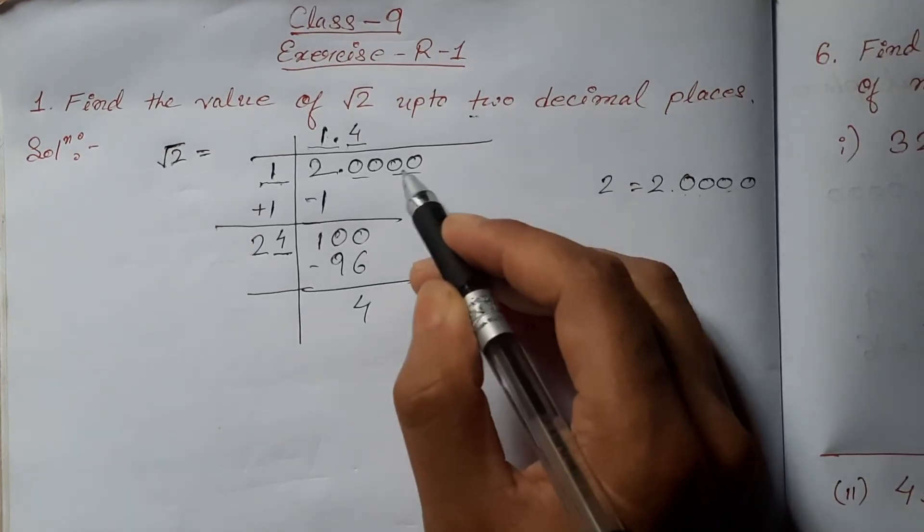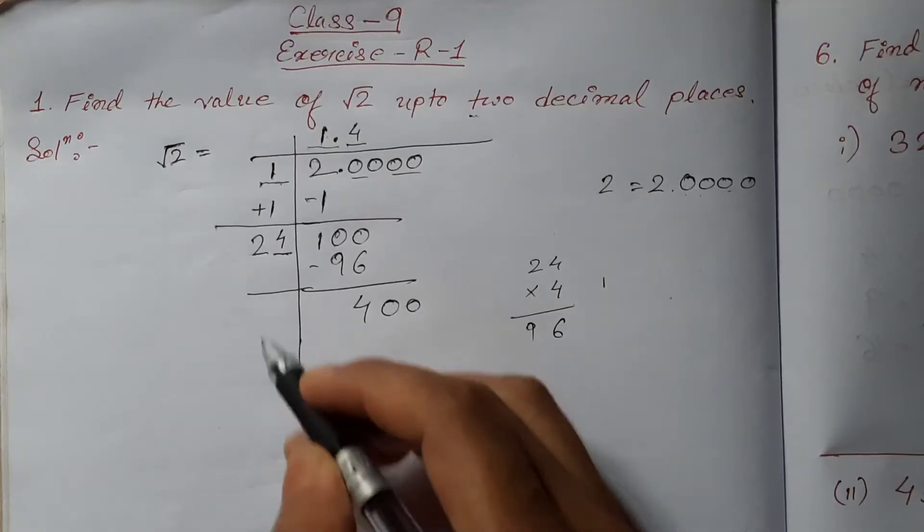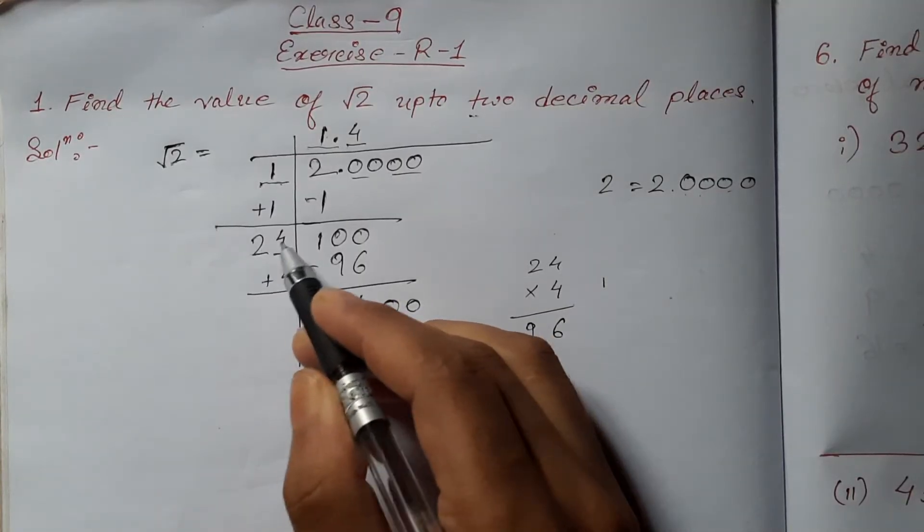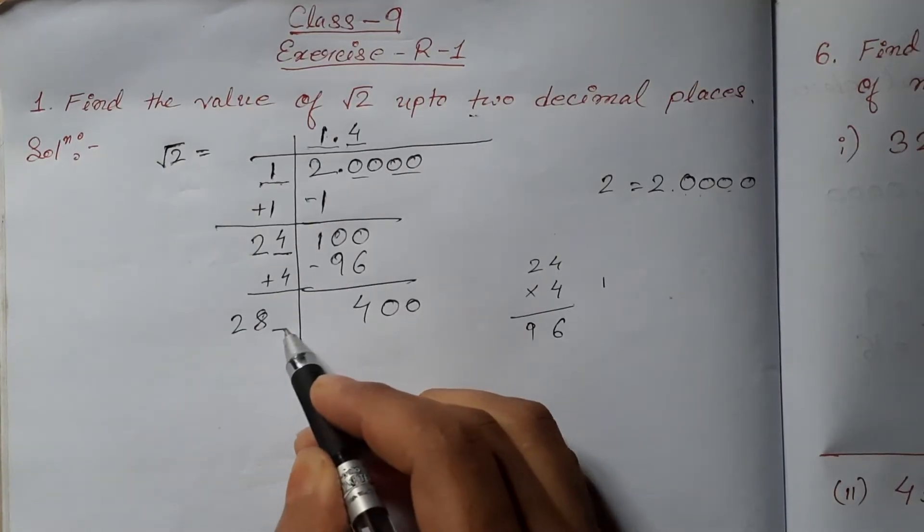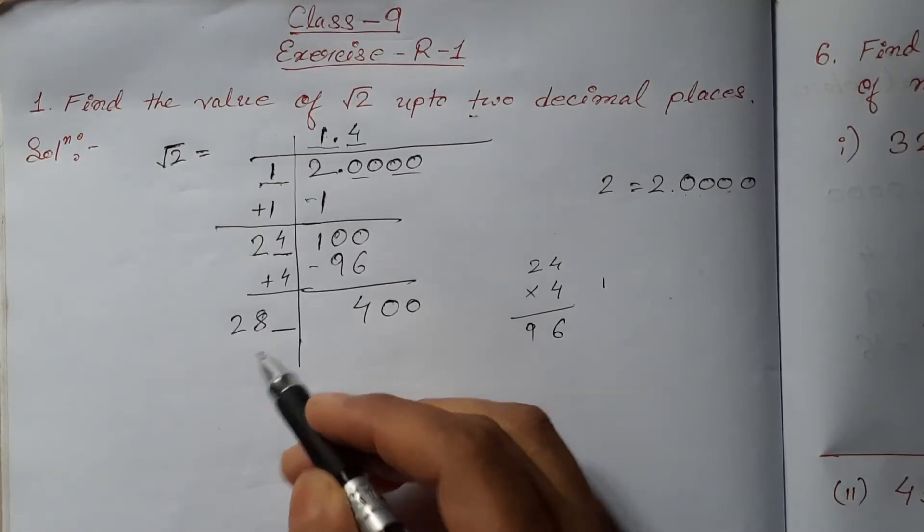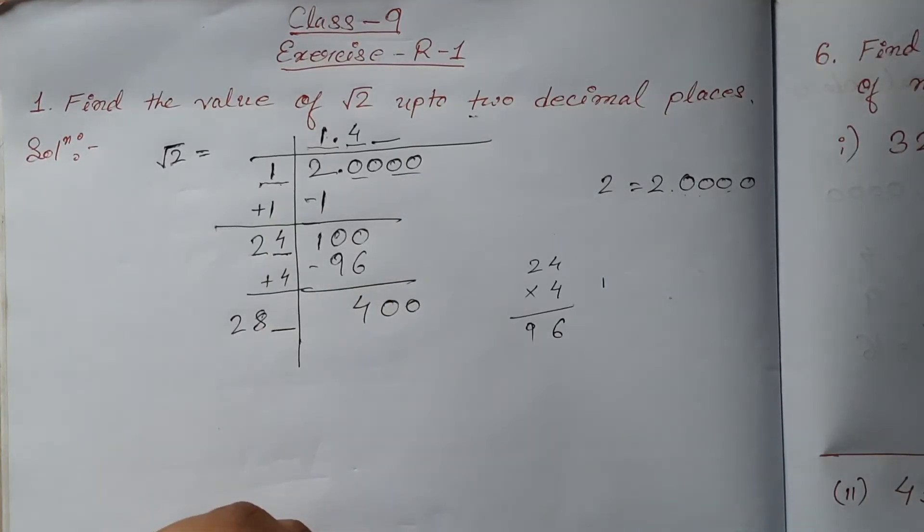Again, bring down these two zeros here. Again, repeat the same process. 24 plus 4 is 28. Now, after 28, we must take a number, and that same number must be taken in the quotient place also.